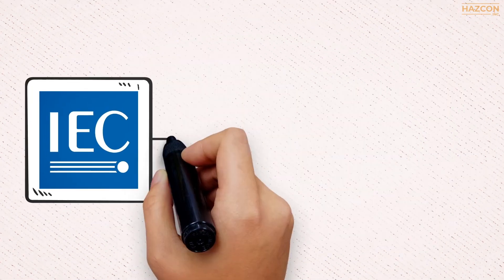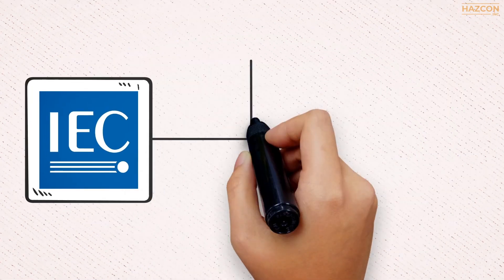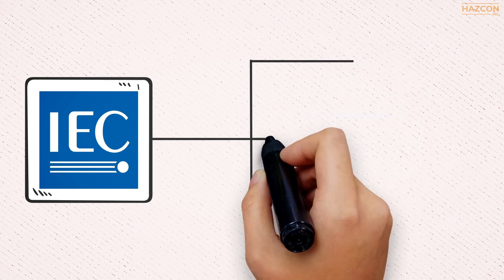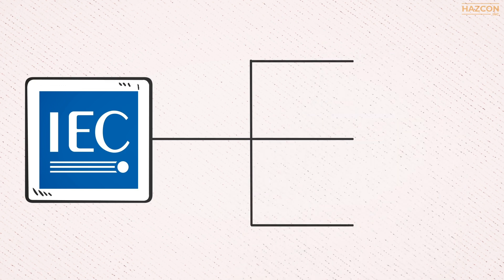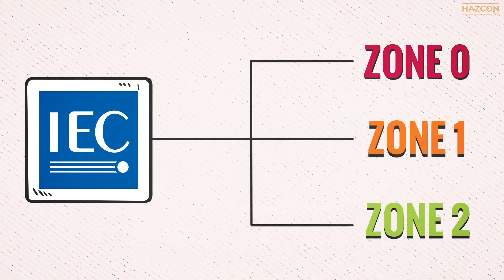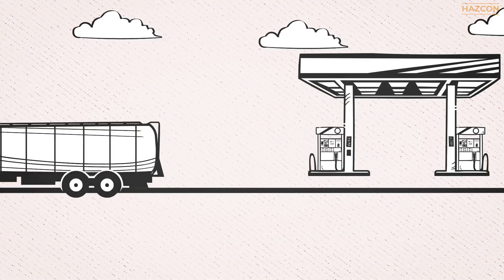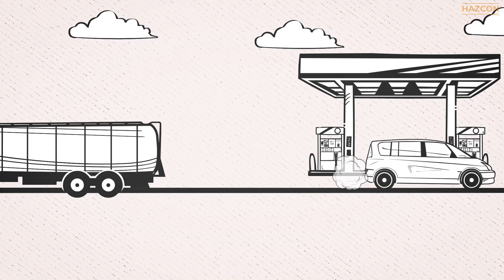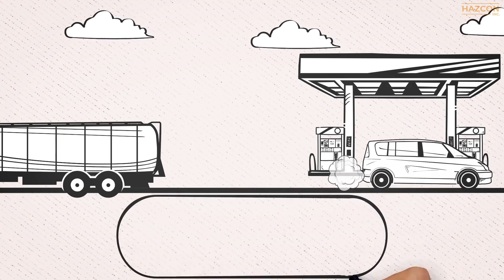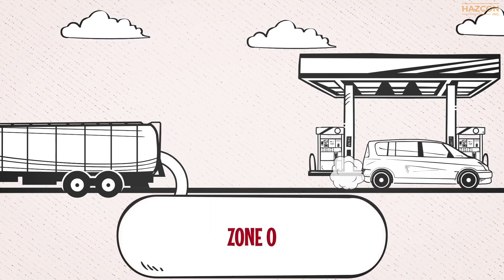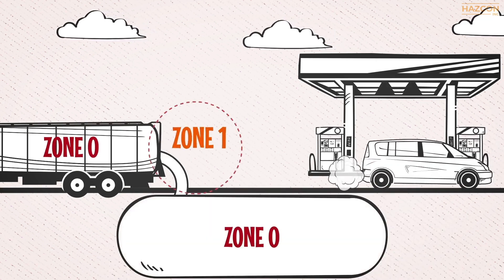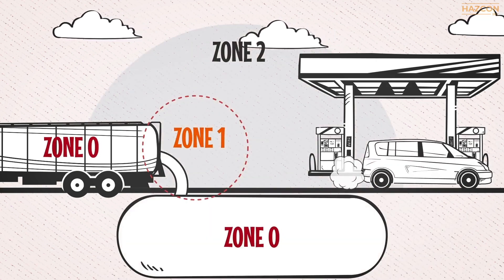As per IEC standards, the classified areas are categorized in three groups: Zone 0, Zone 1, and Zone 2. This diagram of a typical petrol station shows the areas classified as Zone 0, Zone 1, and Zone 2.